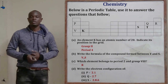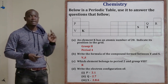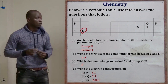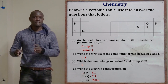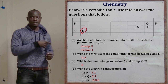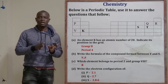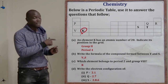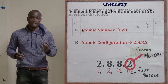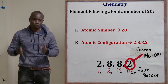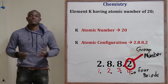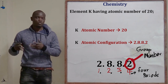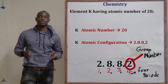The first question states that element K has an atomic number of 20, and asks us to indicate it on the grid. To determine where element K belongs, the first thing to do is write the electronic configuration of that element. Since element K has atomic number 20, we begin by working out its configuration.